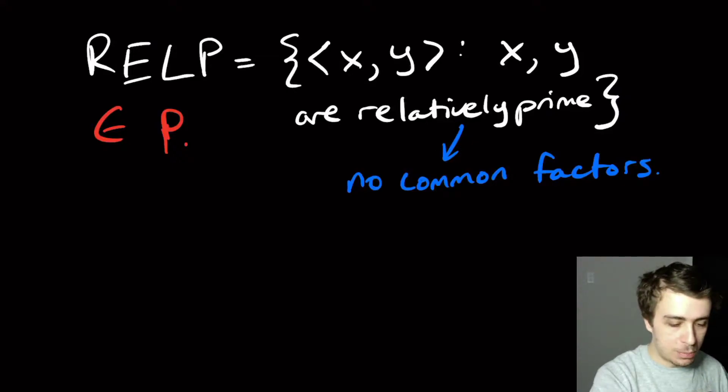Hi, so I want to talk about this problem, which I'm going to call RELP. It consists of all pairs of integers, and I want to figure out whether those two integers are relatively prime.